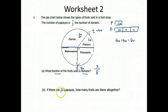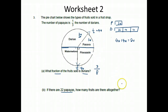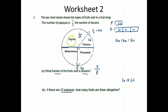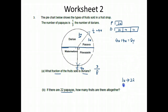Part B: if there were 22 papayas, how many fruits were there altogether? Papaya is 1 unit, so 1 unit is 22. I want to find the total, which is 8 units. 22 times 8 gives 176 fruits altogether.